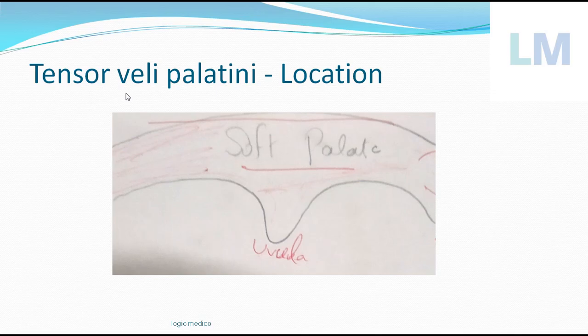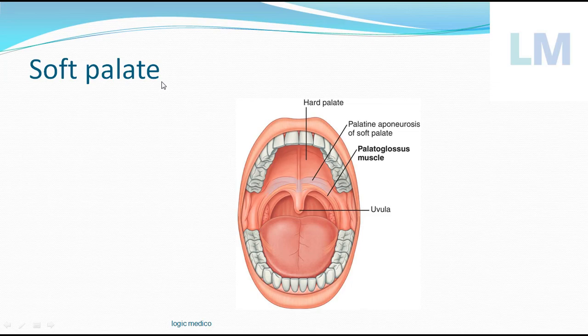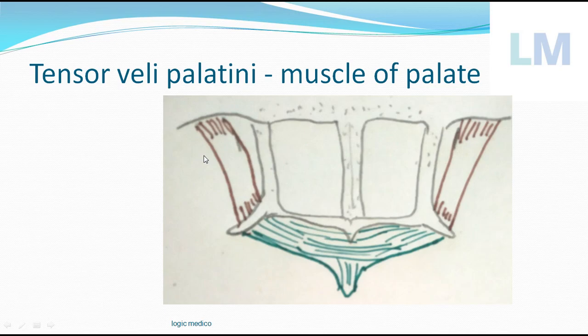Tensor veli palatini is a muscle of the soft palate. As the name suggests, it creates tension within the soft palate. It is called 'veli' because it begins from the Eustachian tube, and 'palatini' because it is present in the palate. You can see this muscle arising from the lower surface of the greater wing of the sphenoid bone, running downwards parallel to the medial pterygoid muscle, hooking around the pterygoid hamulus, and forming the palatine aponeurosis — the framework for the soft palate.